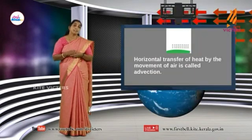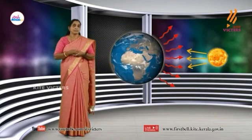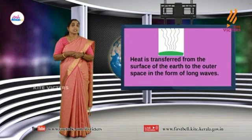The horizontal transfer of heat by the movement of air is called advection. This is Terrestrial Radiation. Terrestrial Radiation is in the direction of our shooting — this is the long wave side. The heated air expands and rises up through the atmosphere.